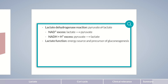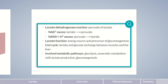Lactate can be used as an energy source or serves as a precursor for the biosynthesis of glucose. The Cori cycle is the process in which lactate and glucose are exchanged between muscles and the liver. The Cori cycle comprises three important metabolic pathways discussed separately in this course: glycolysis, anaerobic metabolism with lactate production, and gluconeogenesis.